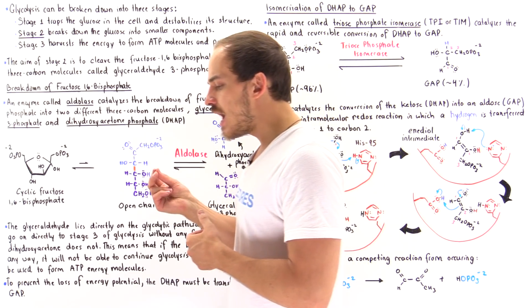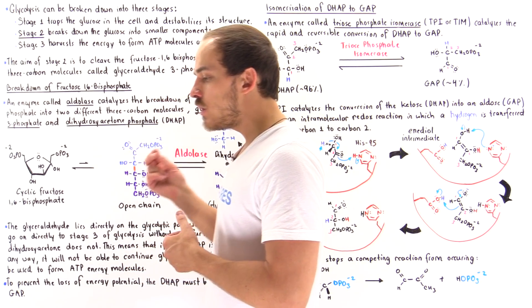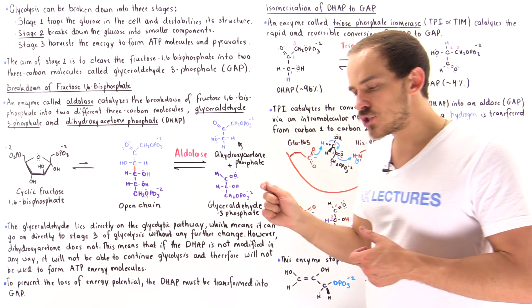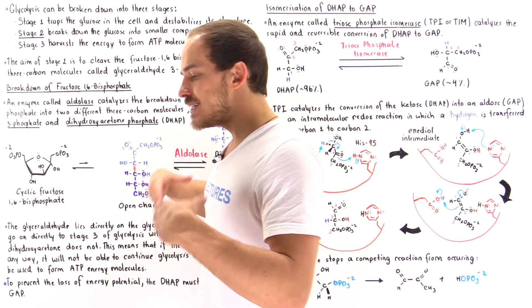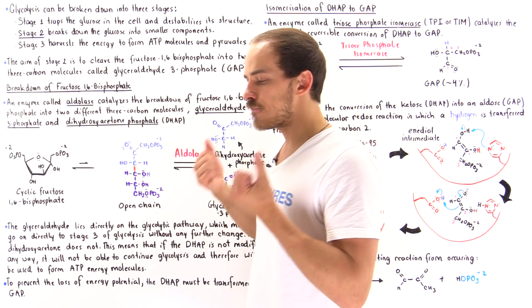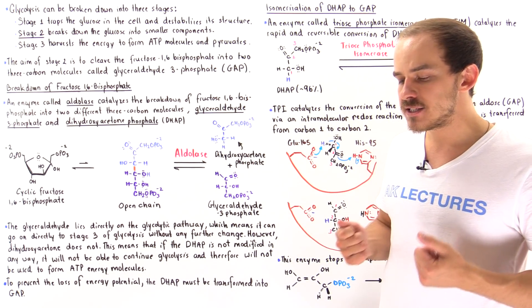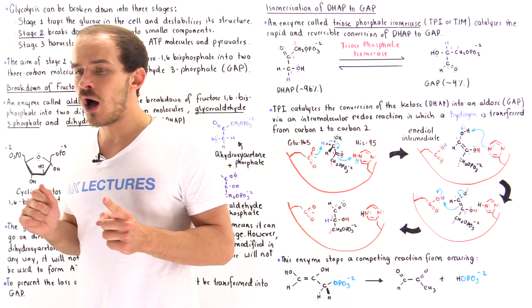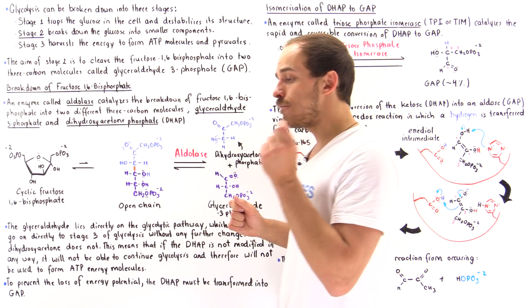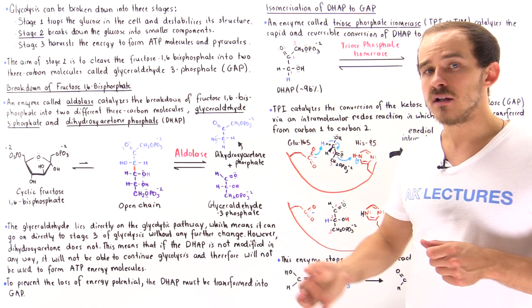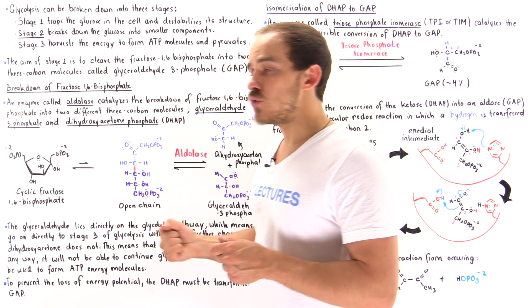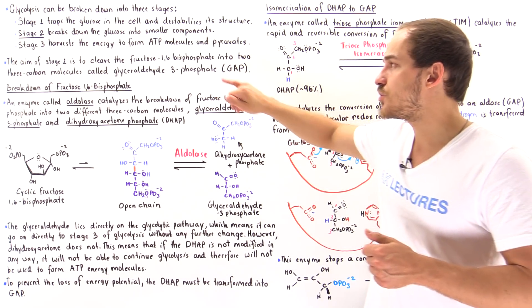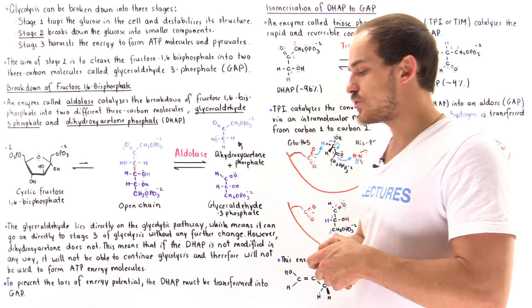So let's begin by describing the general goal of stage two. In stage two, the entire point is to take that highly reactive fructose 1,6-bisphosphate molecule formed in stage one and break it down to form two identical three-carbon molecules called glyceraldehyde 3-phosphate, or GAP molecules.